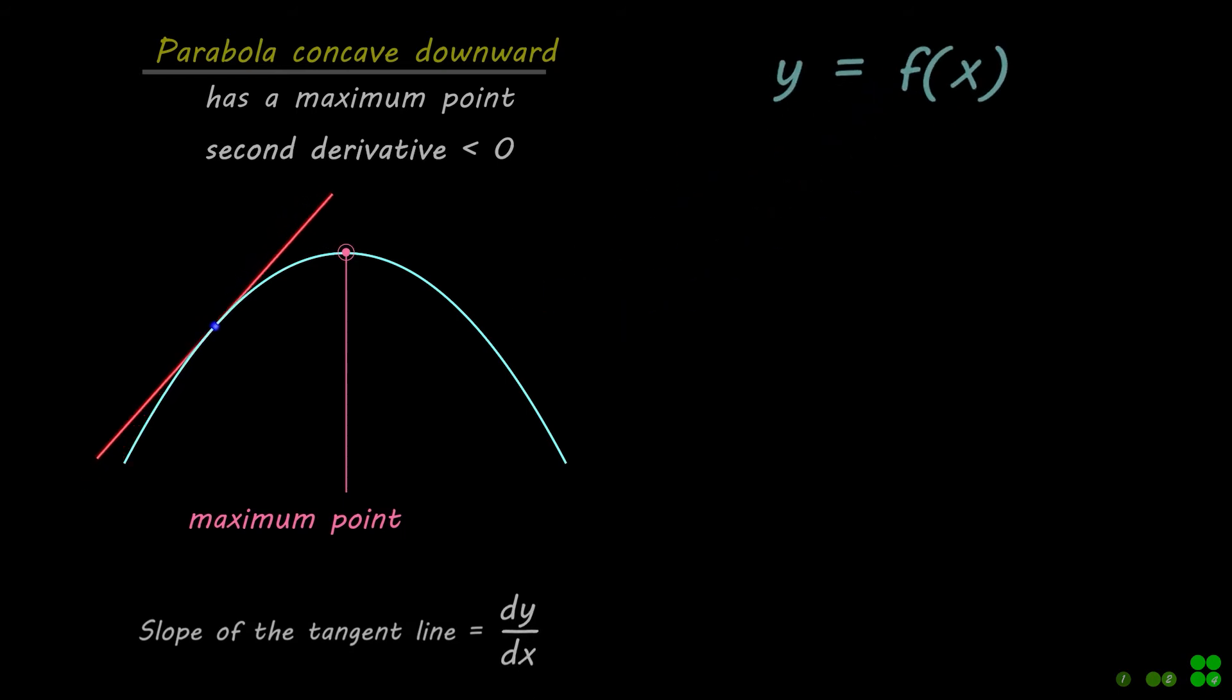Remember, the first derivative of a function gives us the slope of the line tangent to the function at a given point.